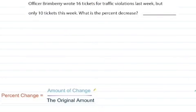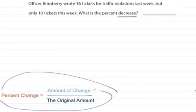Try this one on your own. Officer Brimberry wrote 16 tickets for traffic violations last week, but only 10 tickets this week. What is the percent decrease? You can use your formula right here. Pause the video and work it out. Put your original, your amount of change, the 16 minus the 10 over the original amount. Solve it. Then unpause the video and see if you did it correctly.